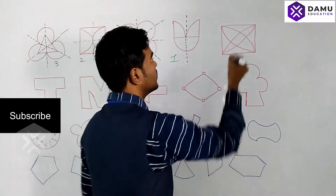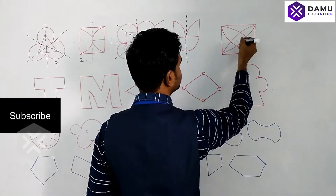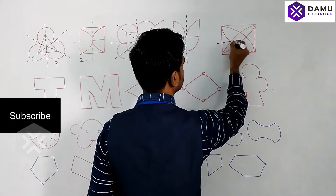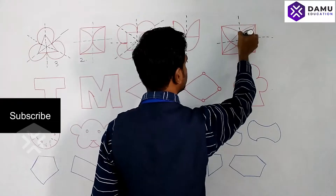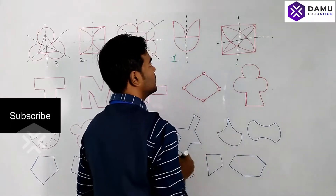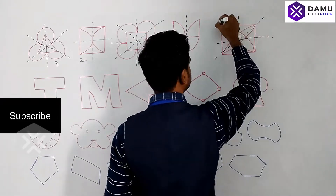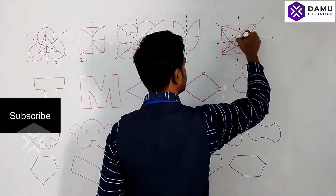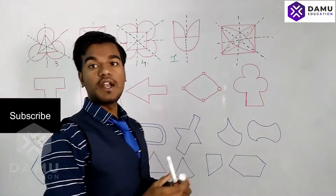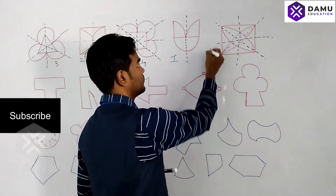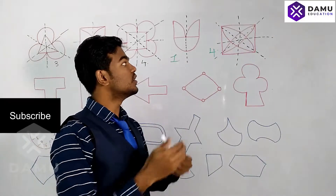For this shape, if you fold it, the halves coincide — and the diagonals also coincide. So totally four lines of symmetry exist for this shape as well. If you fold along any of them, it will coincide.